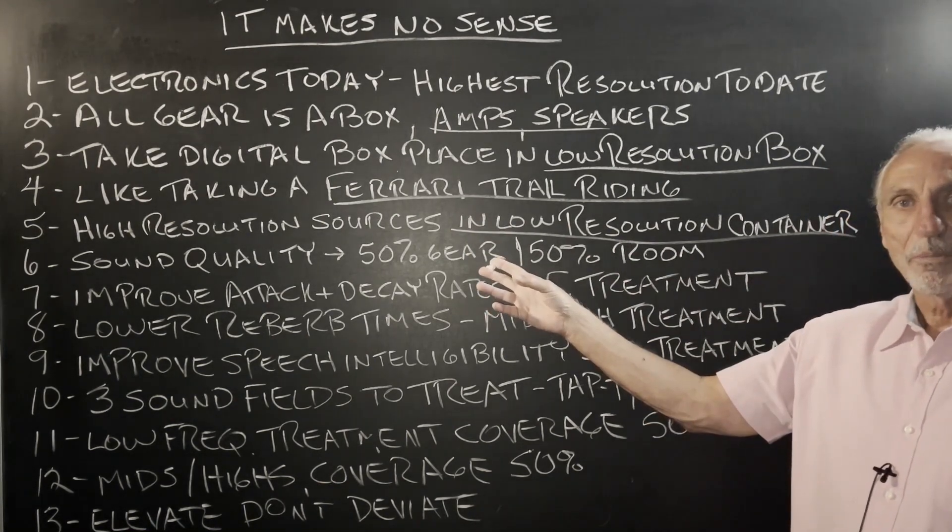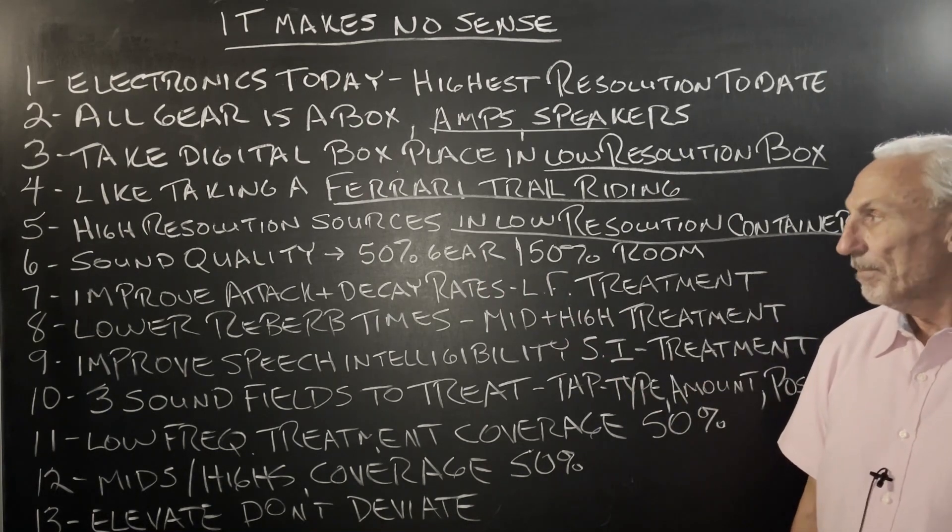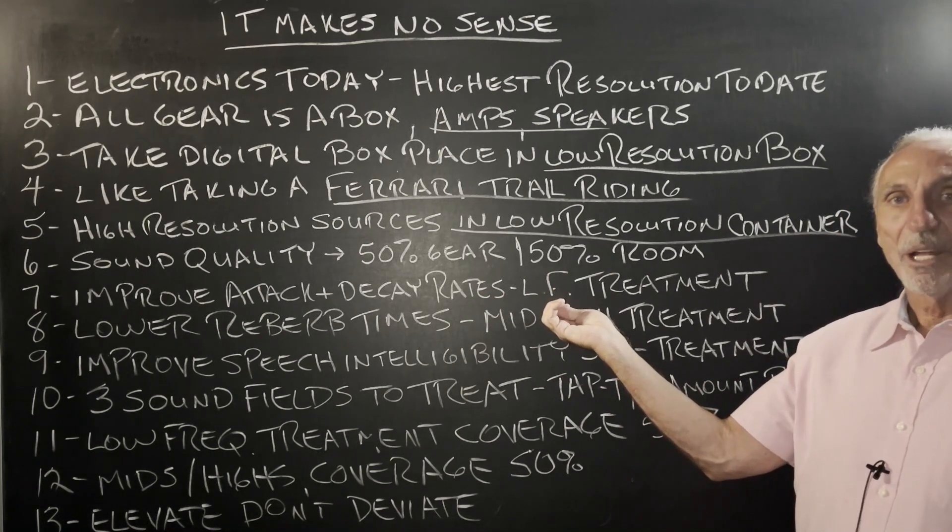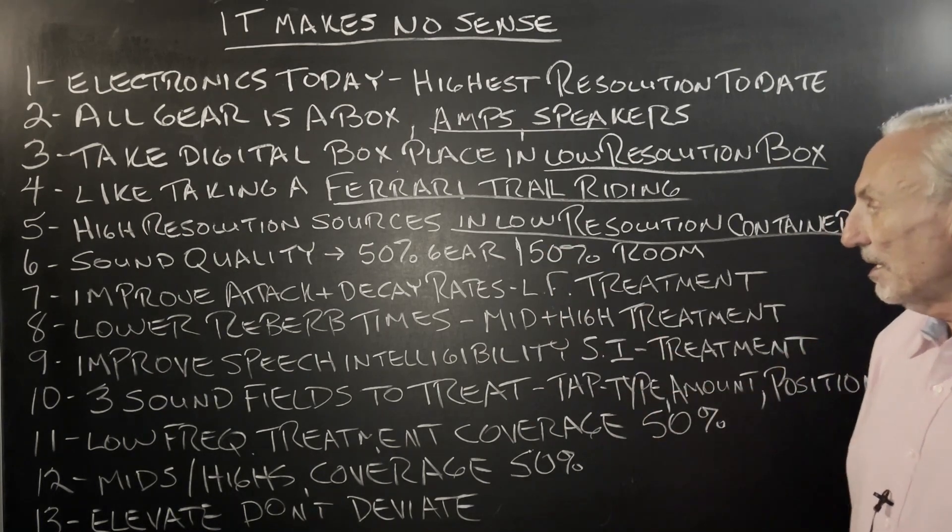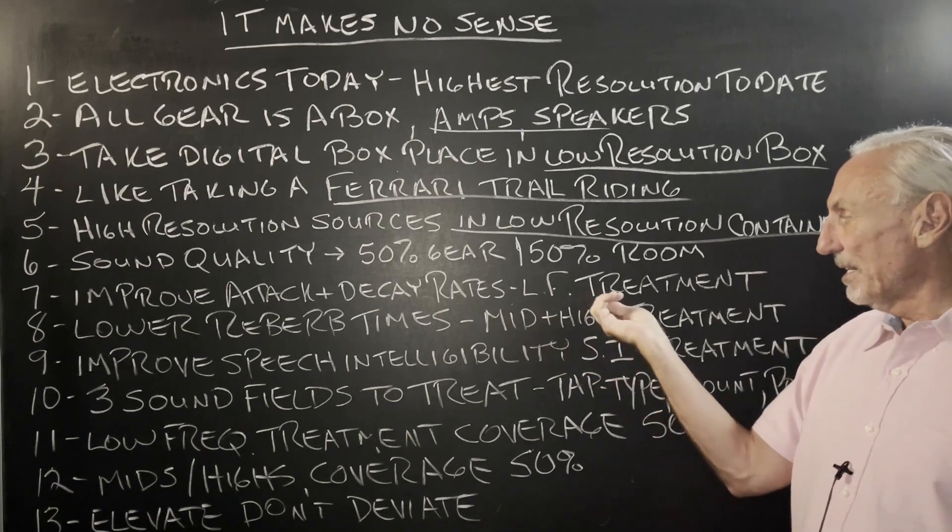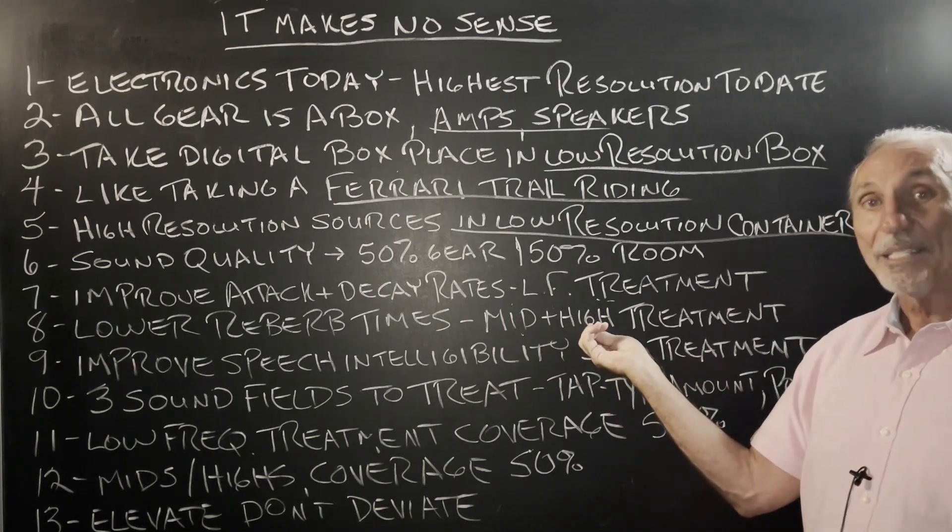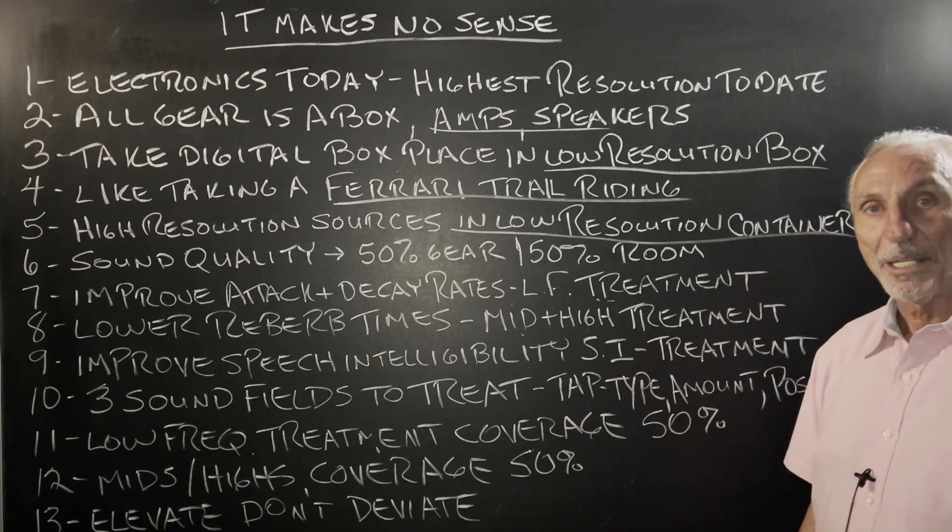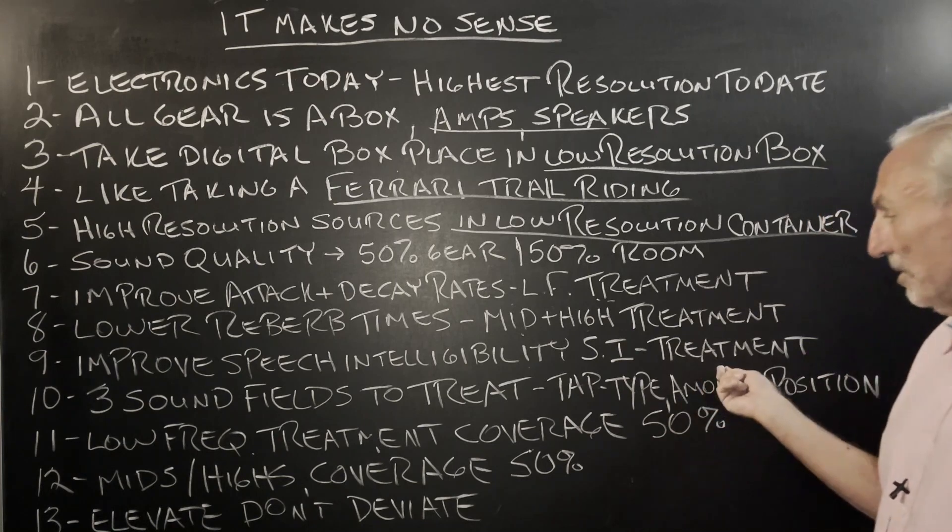If we break the distribution of sound quality down to 50% gear and 50% room, we've got to do a lot of different things. We've got to do a lot of different steps to get the resolution of the room up to the resolution of the gear. So we want to improve the attack and decay rates in low frequency. That takes treatment. We want to lower reverb times, mids and highs. That takes treatment. We want to increase speech intelligibility indexes, which is defined as how many words in a 10-word sentence we can hear. We do that through treatment.